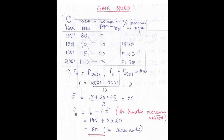From 2001 to 2021 is 20 years, which equals 2 decades. X̄ is the average increase in population: (15 + 20 + 25) / 3 = 20. Applying the arithmetic increase method: Pn = P0 + N × X̄ = 140 + 2 × 20 = 180. The answer is 180 thousands.